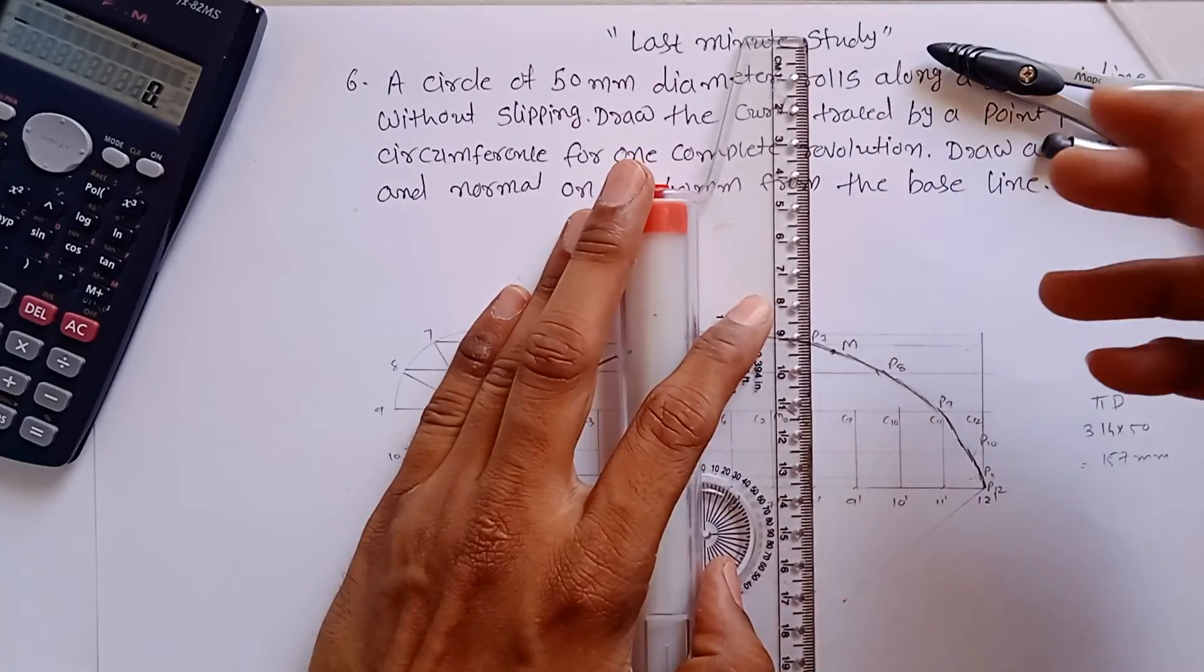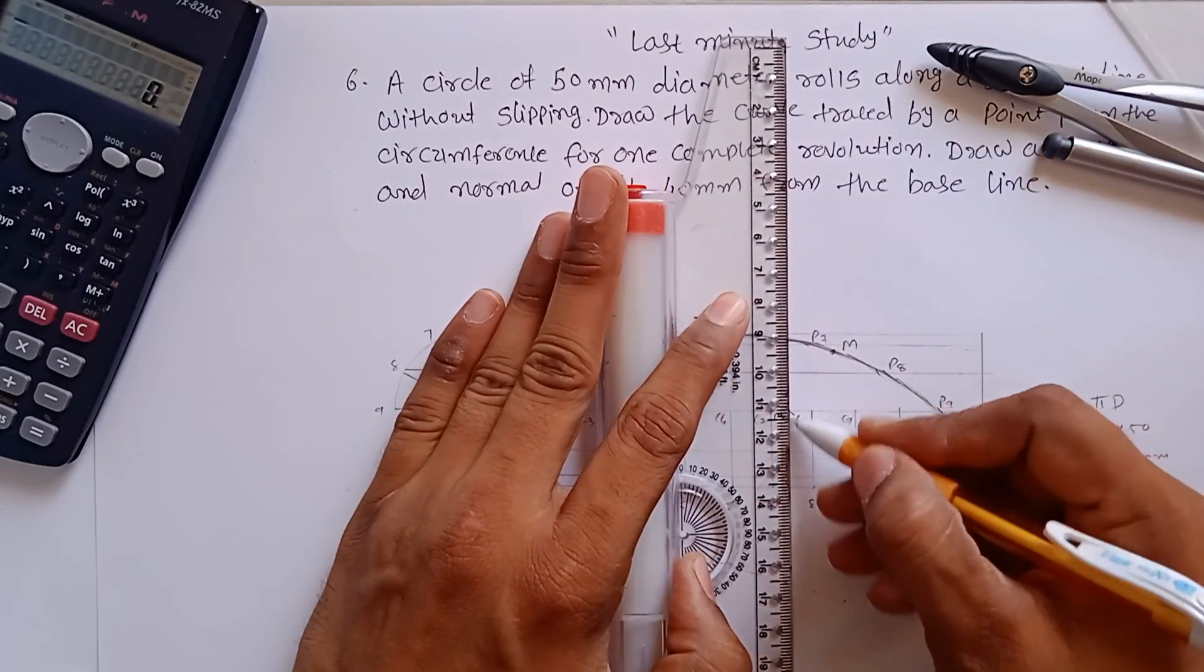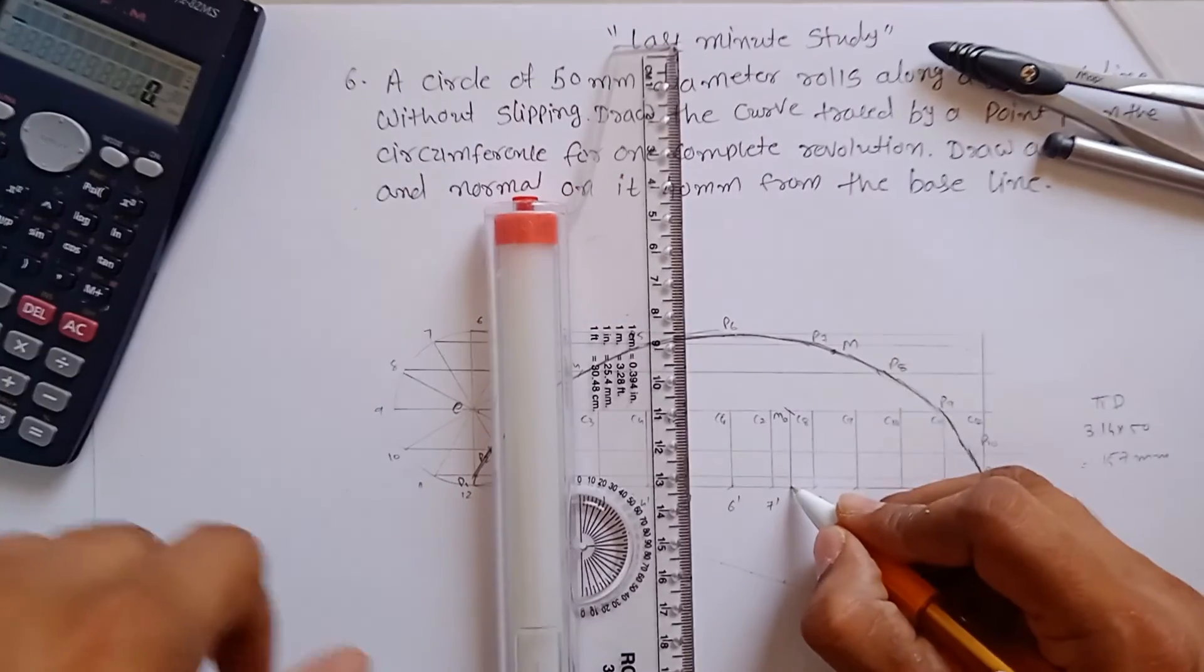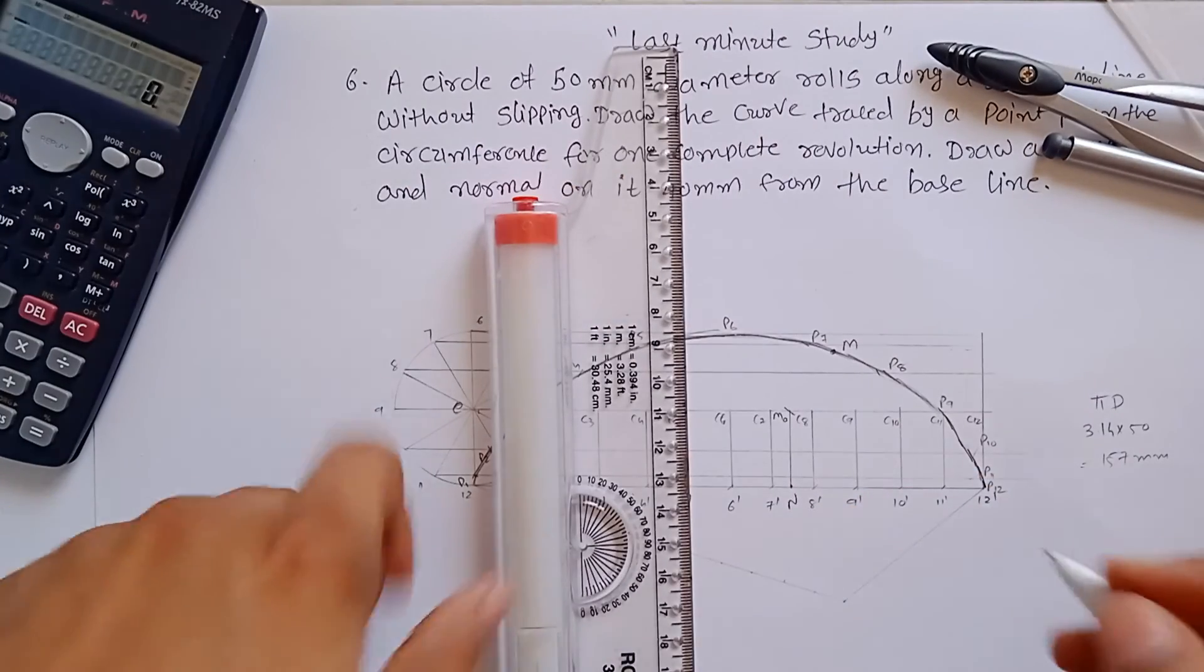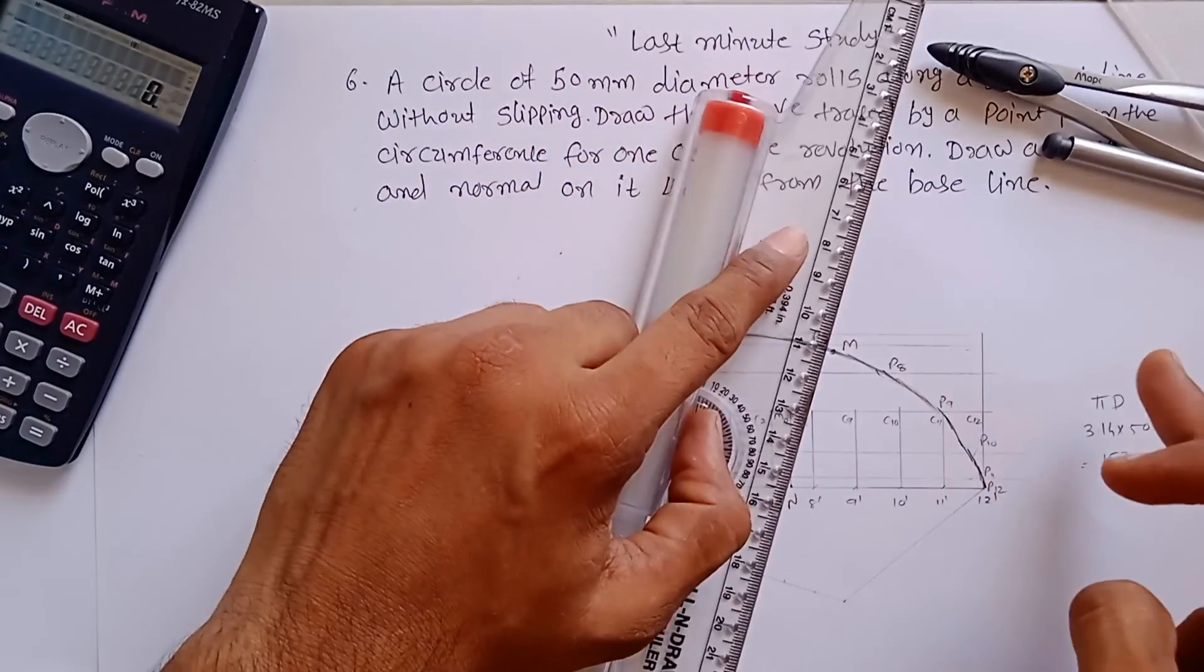Now transfer this point to the straight line. This point, let's say, is N point. Now join N with the M.